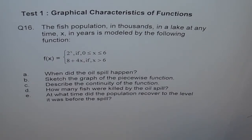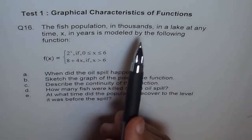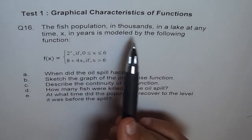I would like to give you a rough sketch of this question. I am not making it on a graph. Let's read the question once again. The fish population in thousands, so whatever answers you are getting about population of the fish, they will be in thousands.